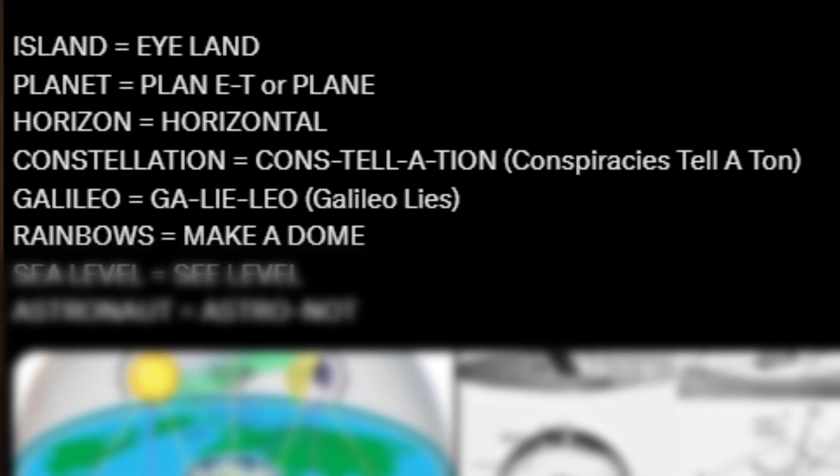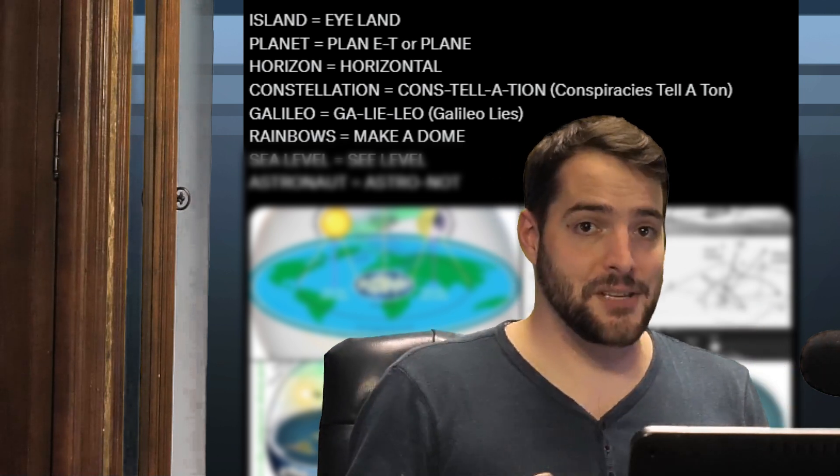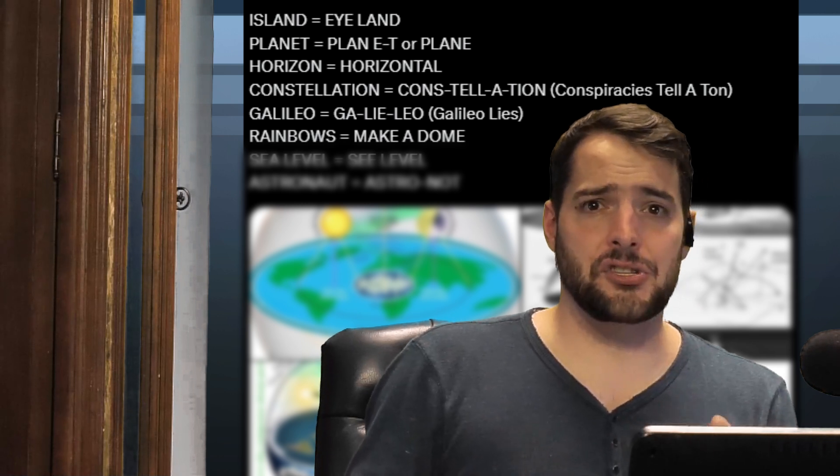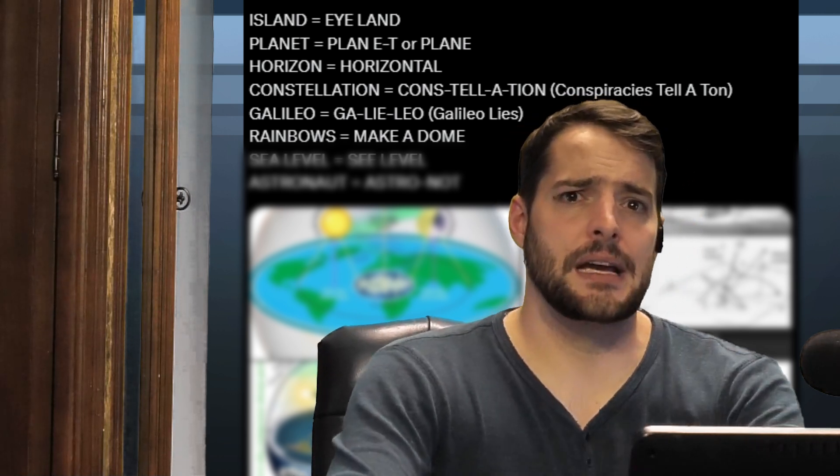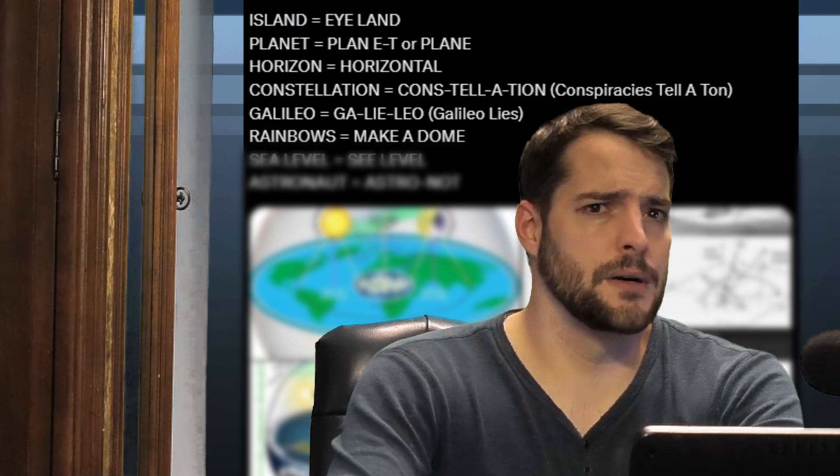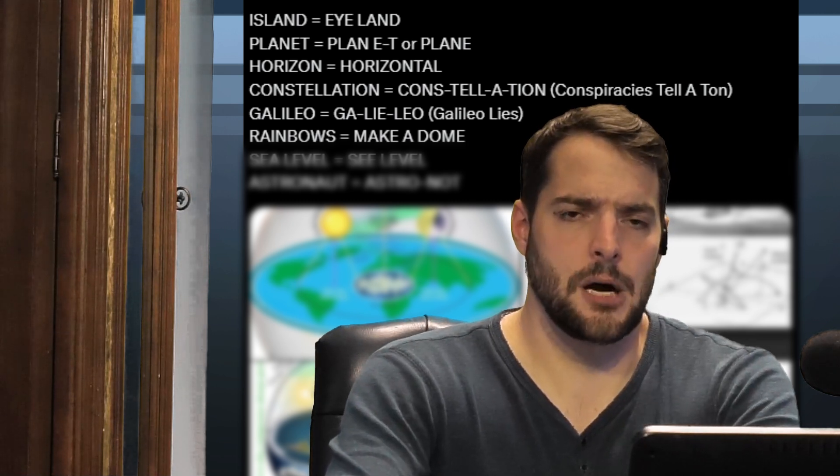Rainbows equals make a dome. Now I genuinely don't understand how we get make a dome from rainbows, unless it's no longer about the etymology of the word and is suggesting that rainbows make a dome. Although technically, surely the dome would make rainbows? Probably? I don't know, because there isn't a giant dome in the sky.